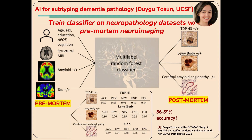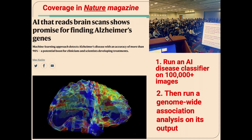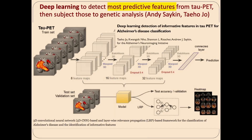The diagnosis alone is challenging, but you could train on in vivo neuroimaging and neuropathology. The neuropathology might identify features we can't see with neuroimaging, such as TDP-43, Lewy bodies, angiopathy, maybe amyloid and tau. Duigotosan has been using paired training of in vivo imaging and post-mortem pathology with a random forest, giving high accuracy in telling what molecular pathology is in the brain. You can also run an AI classifier of Alzheimer's disease on 100,000 images, then run its output through a genome-wide association analysis.